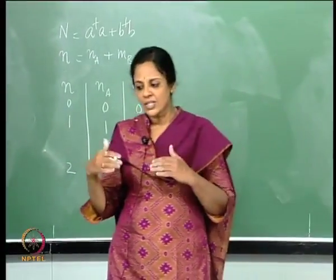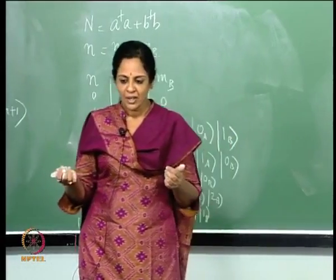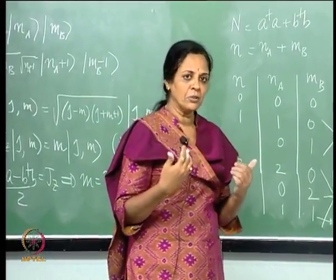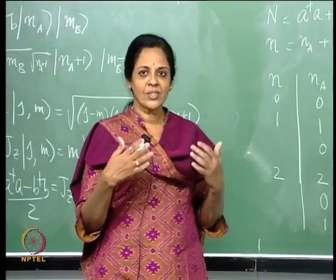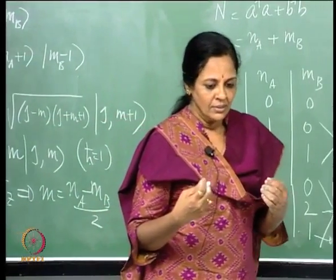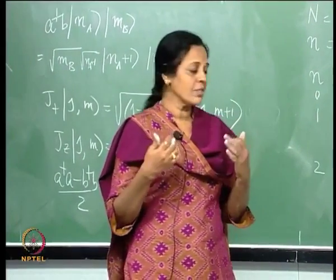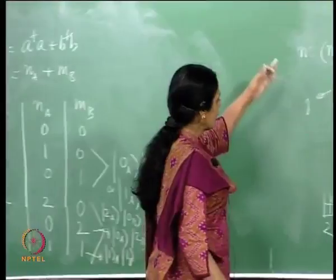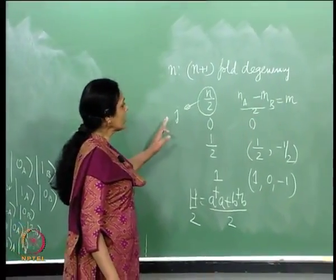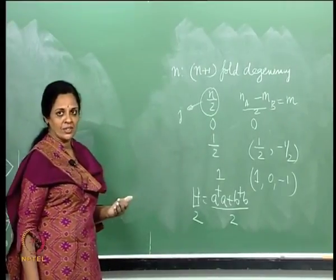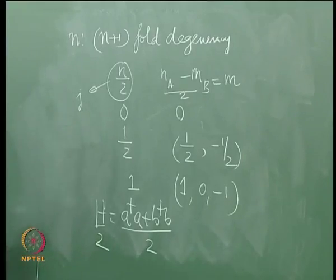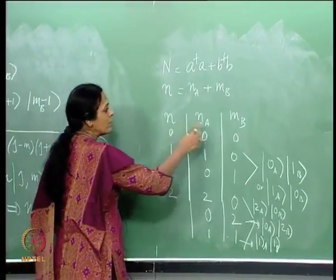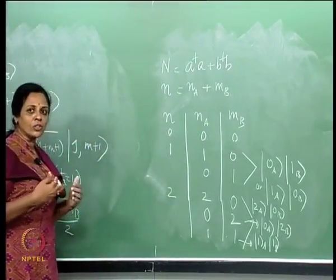We have shown that starting with 2 non-interacting oscillators, we can produce the full angular momentum algebra by suitable combinations of a, a†, b, and b†. We have identified Jx, Jy, Jz as well as J₊ and J₋, and verified that j can only take values 0, 1/2, 1, 3/2, ... with a 2j+1 degeneracy for each j in the 2-dimensional oscillator.